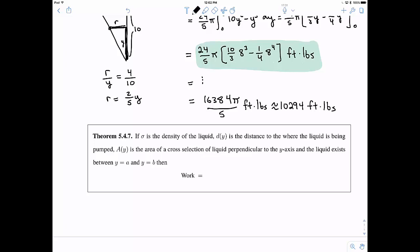Okay, so we want to try to capture what we did up here, right? Because it was a lot of ad hoc stuff. So I'm going to define sigma as this density. This is common notation for density. D(y) is going to be the distance to where the liquid is being pumped. A(y) is the area of the cross section of the liquid perpendicular to the y-axis. Because all of these kind of need to be lifted the same amount. That's why it's a good idea to take them like this. And if the liquid exists between y equals a and y equals b, then the claim is we get this work formula. And work is equal to this integral from a to b, where the liquid exists, of sigma times area, which depends on y, times distance, which depends on y, times dy. And if you're careful with your units, this should do it for you.